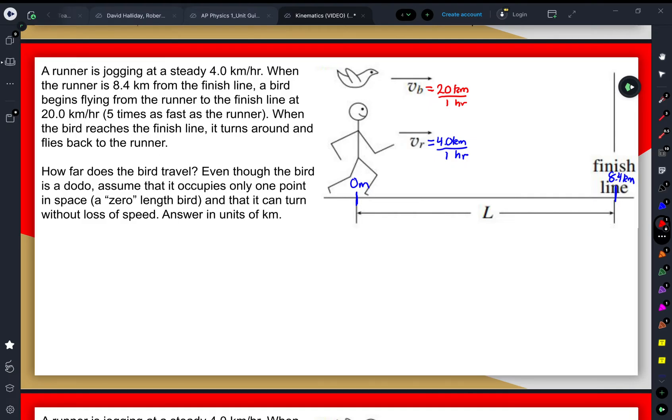When the bird reaches the finish line, it turns around and flies back to the runner. So really, this first motion of the bird, it flies in a straight line in that direction. That means it travels one length this way.